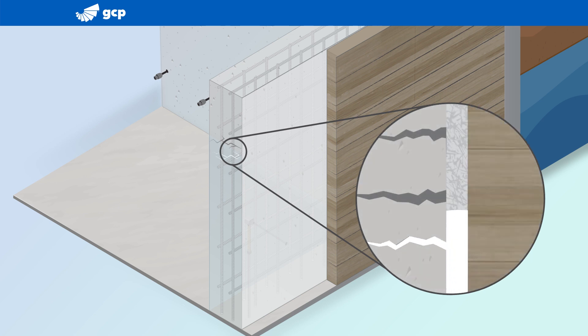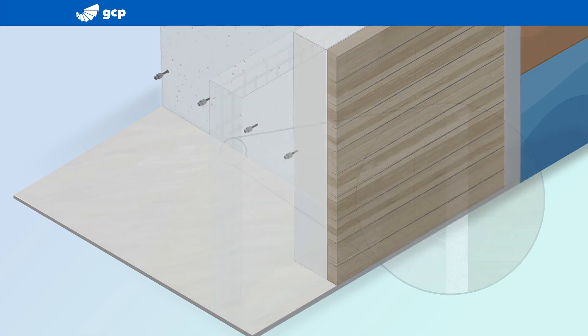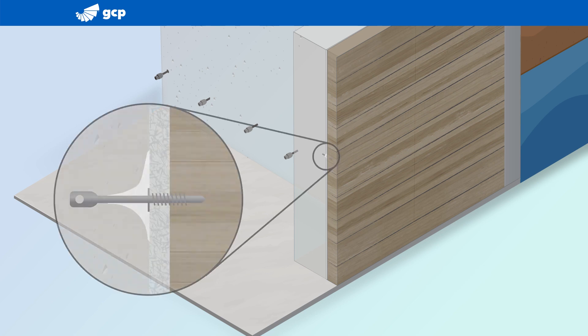To stop lateral water migration, the PreProof SCS waterproofing grout quickly gels, sealing around the rebar anchors and penetrations with redundancy.